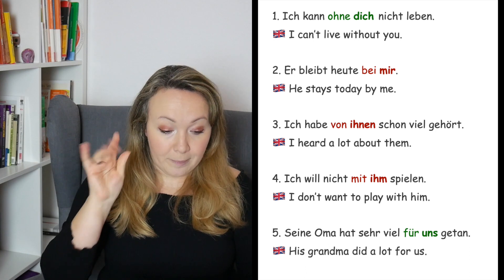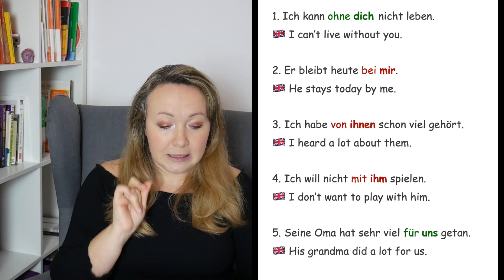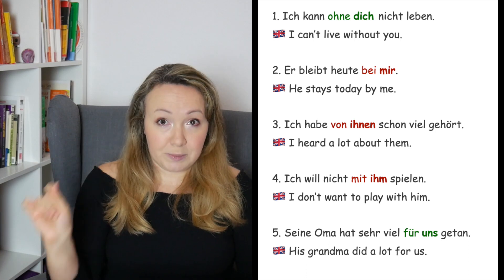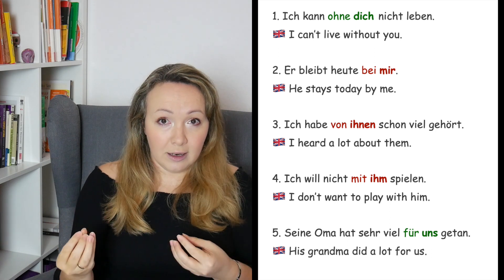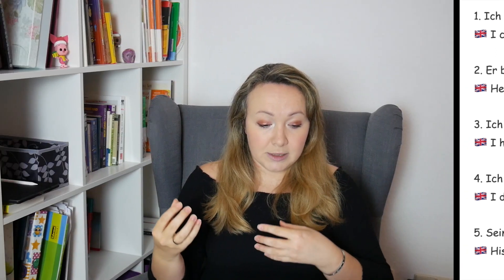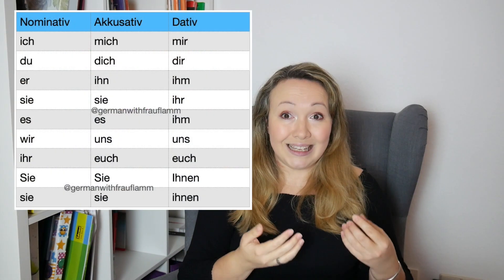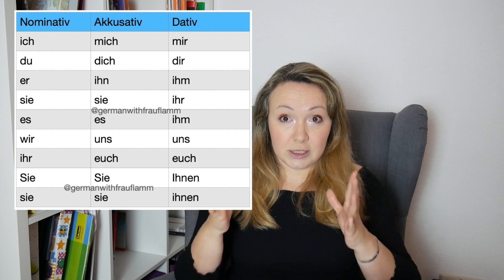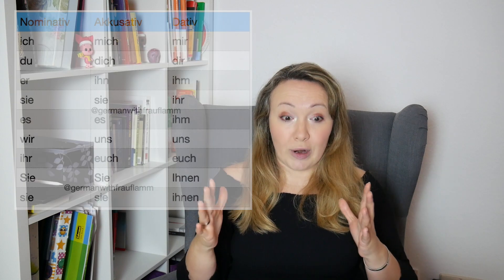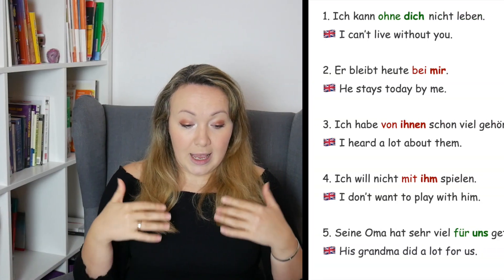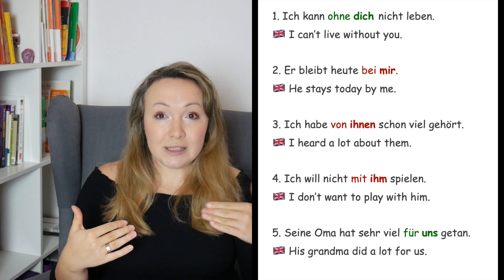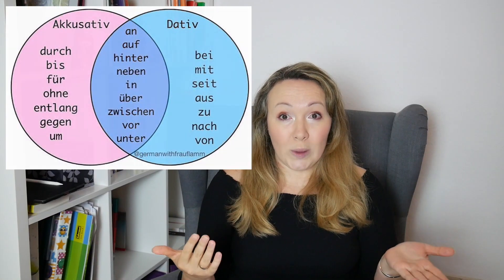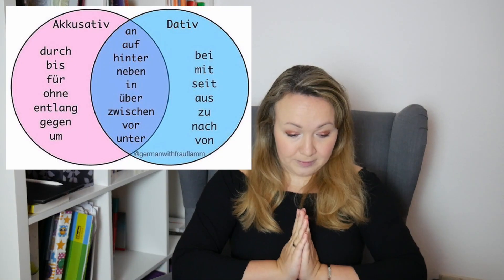Sentence number four: 'Ich will nicht mit ihm spielen.' In nominative, 'er' becomes 'ihm' in dative, as you can see on your screen right now. Again, it is dative because the preposition 'mit' always comes with dative.